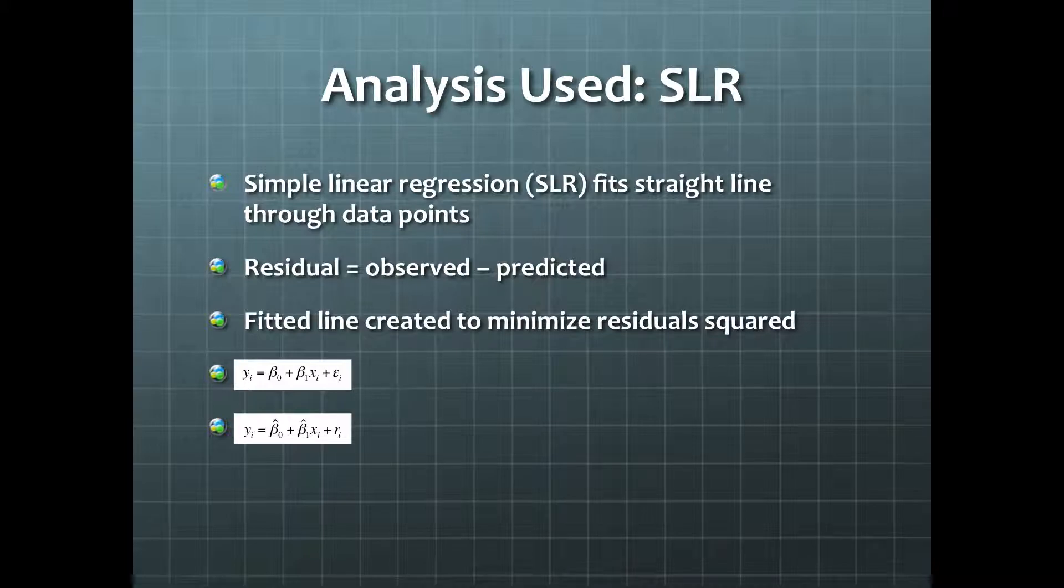The distances between the observed points and the predicted line are called residuals. The fitted line is created so that the residuals squared is as small as possible. The regression model is given by this equation, which we estimate by this equation.